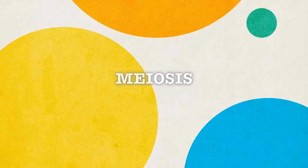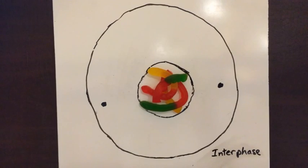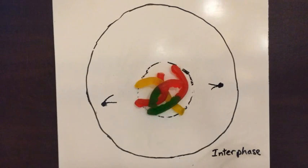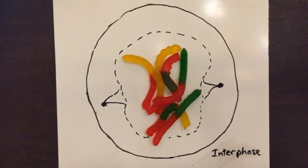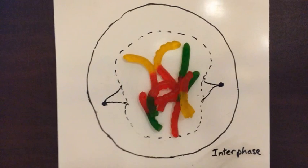Meiosis, a division process that only occurs in sex cells. Before meiosis, a growth period known as interphase is required. In this phase, the DNA replicates and the centrioles start to form spindle fibers.